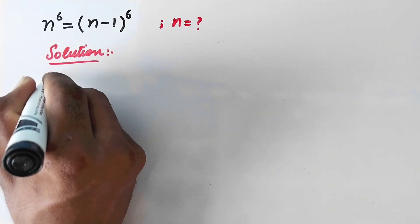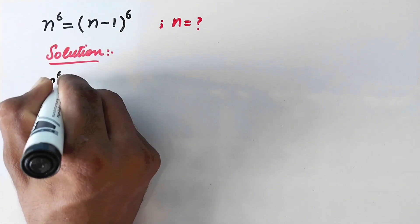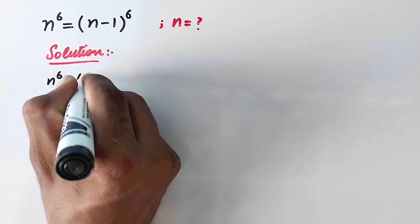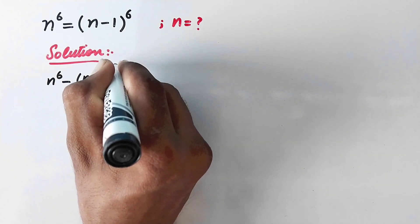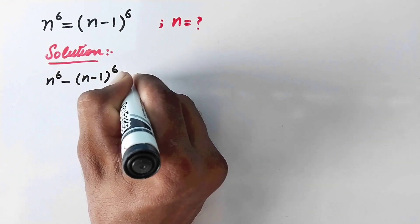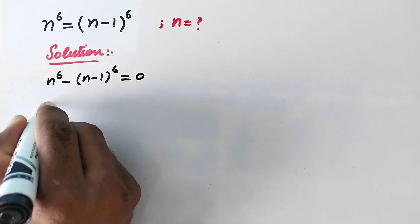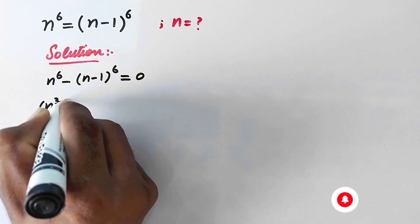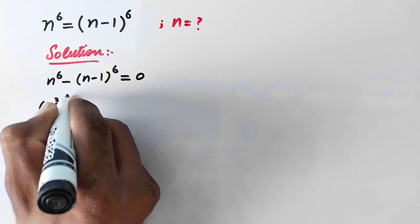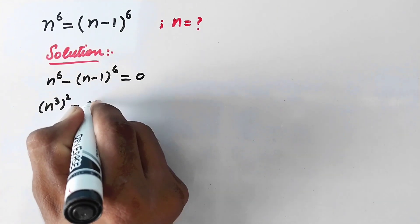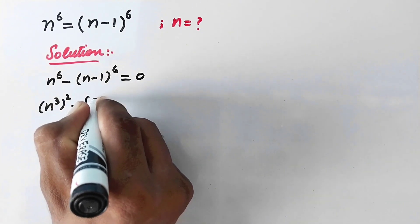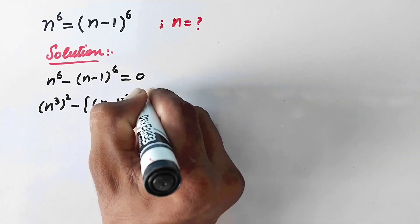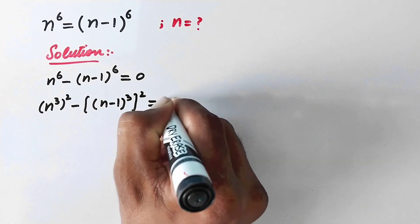In the first step we will move n minus 1 to the whole power 6 to the other side, so n to power 6 minus n minus 1 to the whole power 6 is equal to 0. We can rewrite this as n to the power 3 squared minus n minus 1 to the whole power 3 squared is equal to 0.